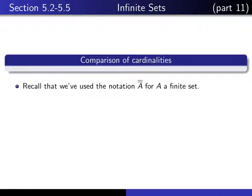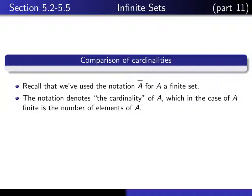Recall that we introduced this notation, A with a double bar on top, in case A is a finite set. When A is finite, it makes sense to talk about the number of elements of A, or what we call the cardinality of A. And we used this notation to denote the cardinality of A.